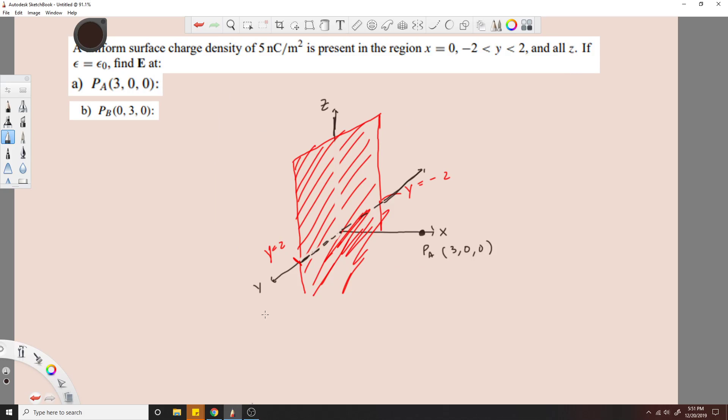A uniform surface charge density of 5 nanocoulombs per meter squared is present in the region from y equals 2 to y equals negative 2, and we want to know E at some point PA and PB. So you have your electric field equation, that's what we'll start with, taking this form for some unit vector.